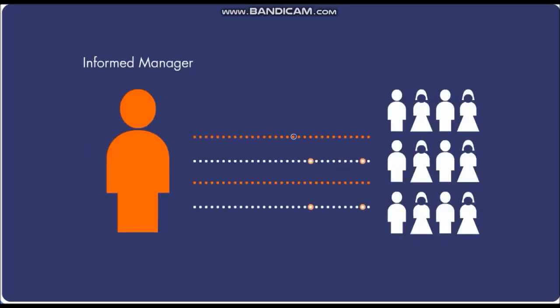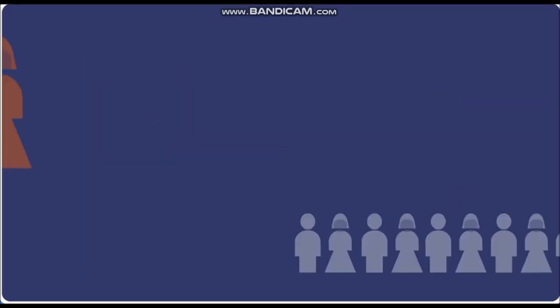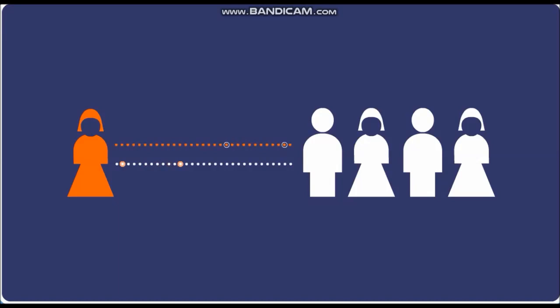The workforce knows exactly what managers expect - no mixed messages because managers and workers are aligned. This builds two-way trust. Because people know what is expected of them and can be trusted to do it, there's less need for bureaucracy, audits and supervision, so workload decreases after the calculative stage.